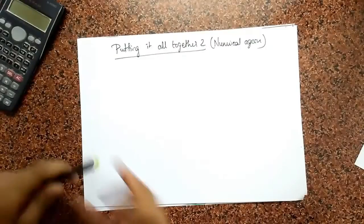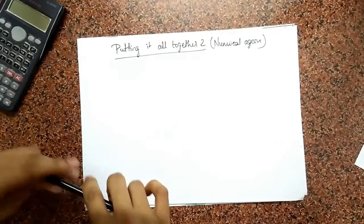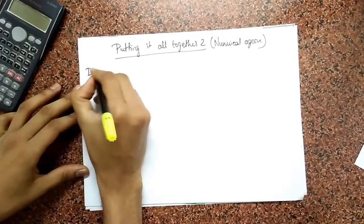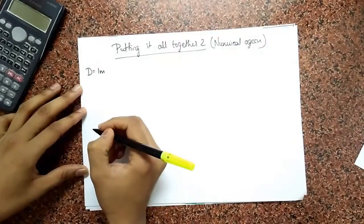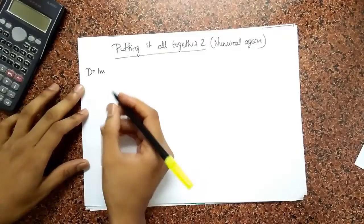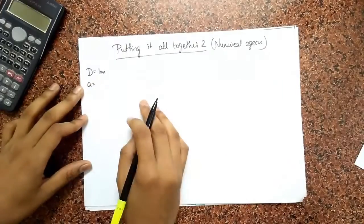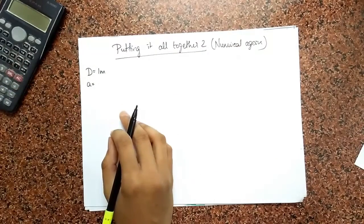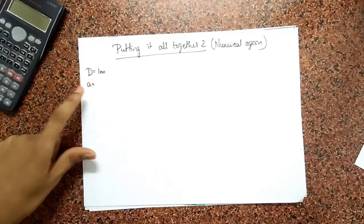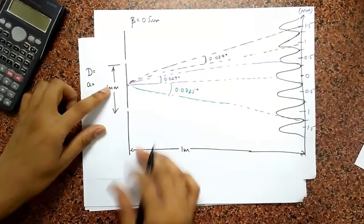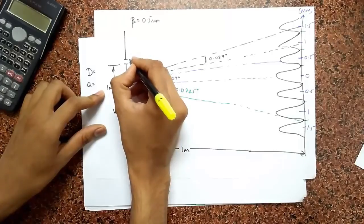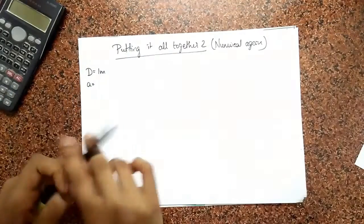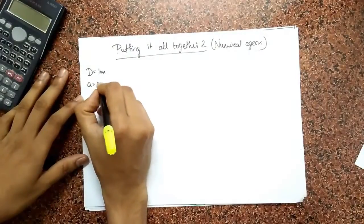Let's do a second numerical, and this will be on the single slit. Let's consider the same example as before — screen distance of one meter. In the single slit, remember, I'm now worried about the width of the slit itself. The width of the slit, which I call A, if you compare that with D — the distance between two slits — clearly from the diagram, A has to be way smaller than D. For this hypothetical experiment, let's say the slit width is 0.1 millimeters.